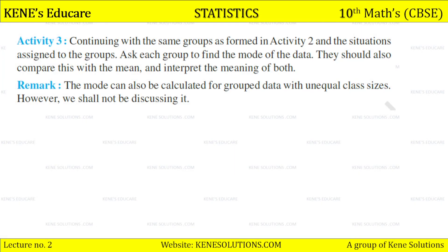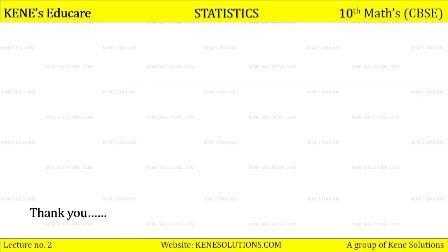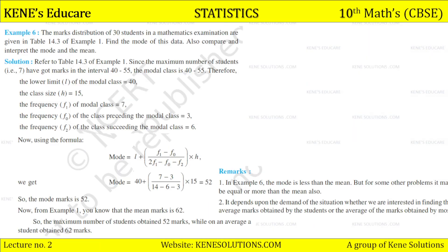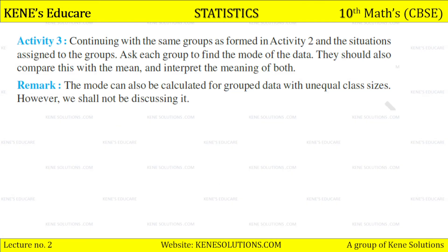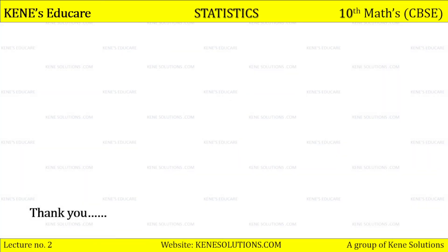Activity 3: Continuing with the same groups as formed in Activity 2, ask each group to find the mode of the data, compare it with the mean, and interpret the meaning of both. Remark: The mode can also be calculated for grouped data with unequal class sizes, however we shall not be discussing it here. Today we have learned the mode formula: Mode = L + [(f1 − f0) / (2f1 − f0 − f2)] × h.